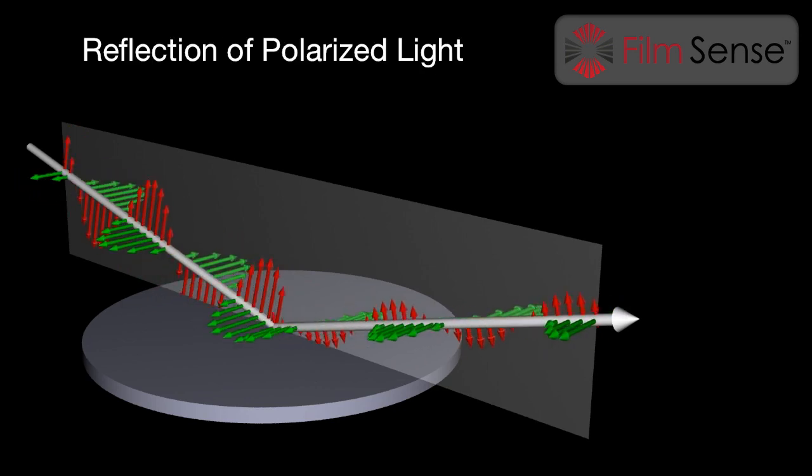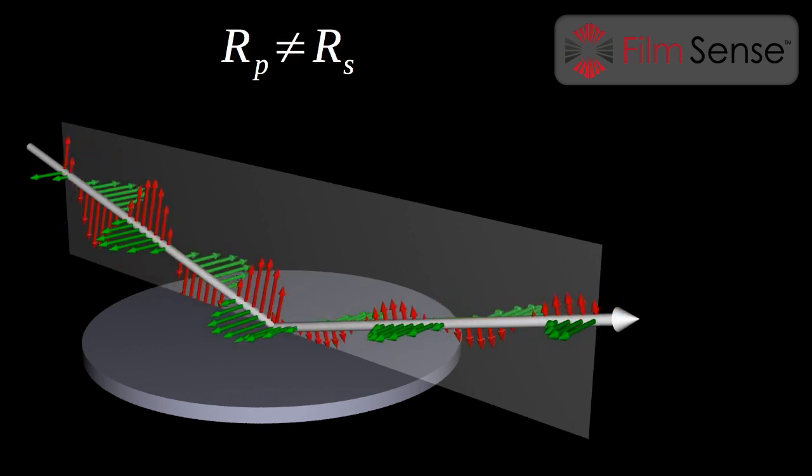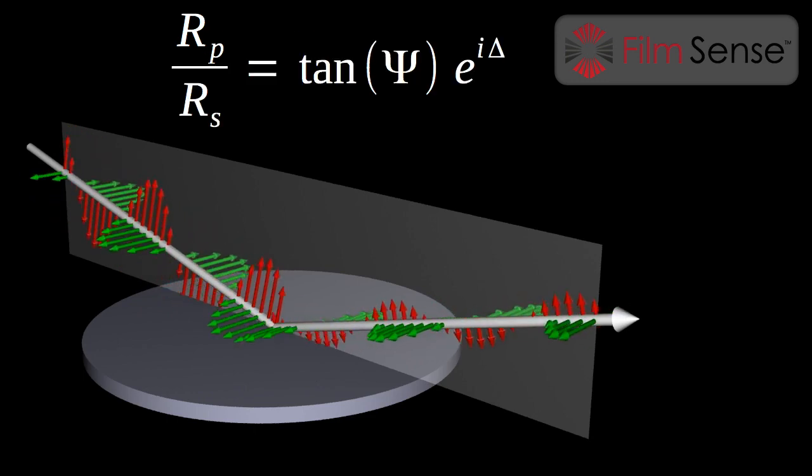The enabling principle of ellipsometry is that p- and s-polarized light reflect differently. Ellipsometry measures the complex reflectivity ratio of p- and s-polarized light, and typically reports the results in terms of the ellipsometric psi and delta parameters. Tan psi is the magnitude of the ratio, and delta is the phase difference between the p- and s-reflected light.